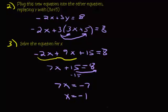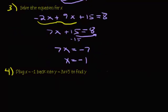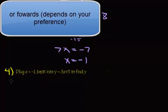Now we'll move on to step four where we're going to find y. Step four is plug x equals negative 1 back into y equals 3x plus 5 to find y. You can plug it back into this equation or any of the two original equations. Just make sure that you check your final answer. If it doesn't work, go back and check this, and keep working backwards until you find a mistake.